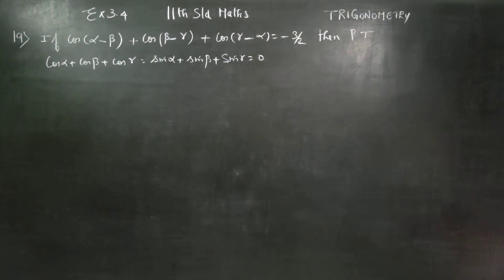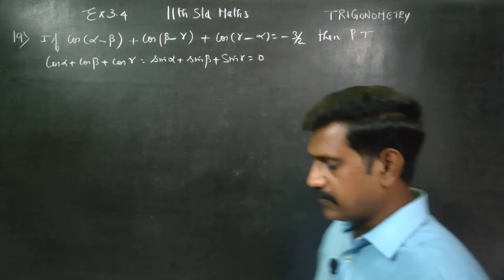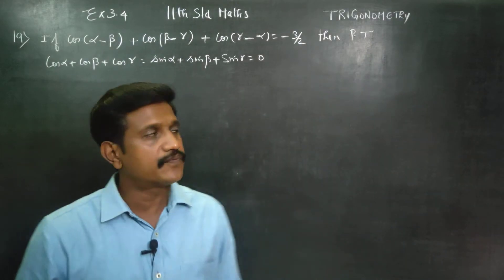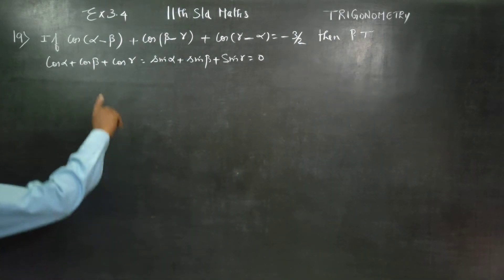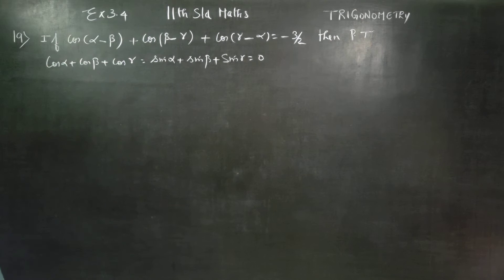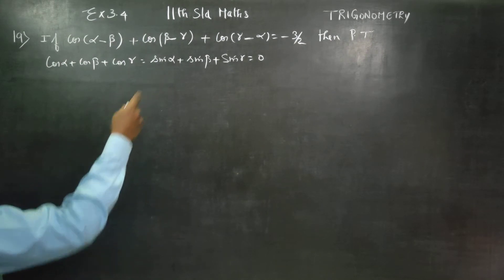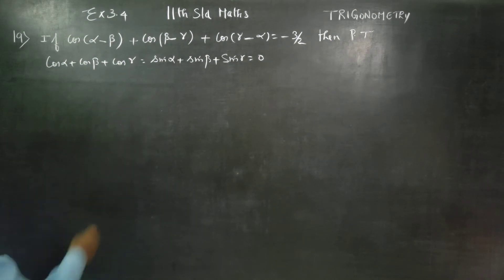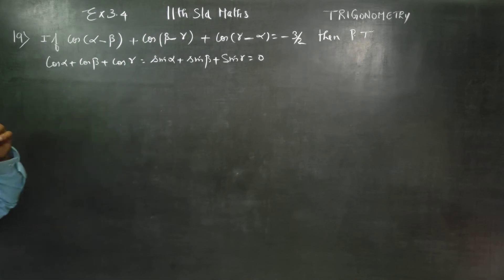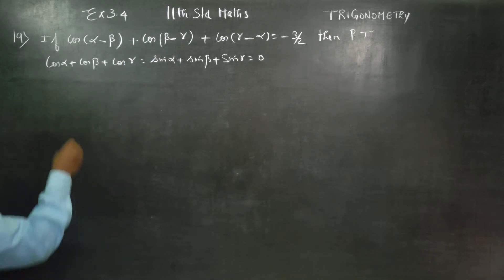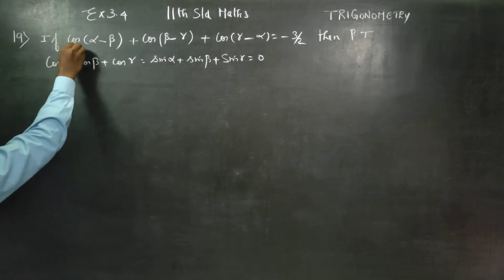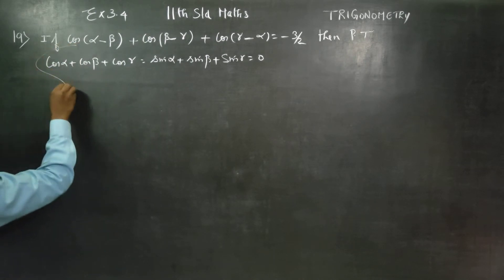Hello 11th standard students, I am Etro Karanagaran. In exercise number 3.4, sum number 19, if cos(alpha minus beta) plus cos(beta minus gamma) plus cos(gamma minus alpha) is equal to minus 3 by 2, you have to prove this. First of all, I am going to expand this.